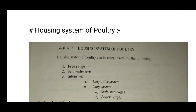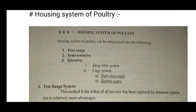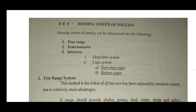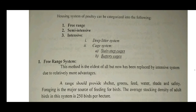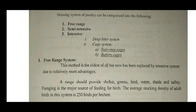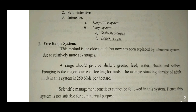The next topic is housing systems of poultry, which is very important from an exam point of view. Housing systems can be categorized as: first, free range; second, semi-intensive; and third, intensive. The intensive system is further divided into deep litter system and cage system. The cage system is also classified into two types: stair-step cage and battery cage.